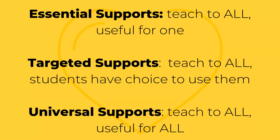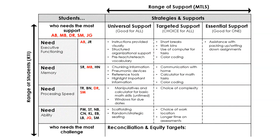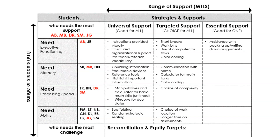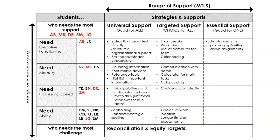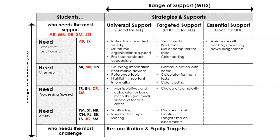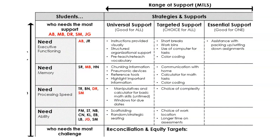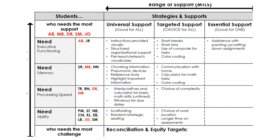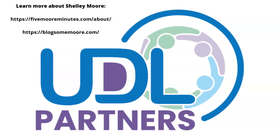But what makes them universal is when we teach them to all students and they are useful for all students — this is what should happen at a Tier 1 level of support. As you can see in this example, students and their areas of need are identified in the first column. After that, essential, targeted, and universal supports are determined. When we have a cheat sheet — a graphic organizer or template of strategies and supports and where learners fall within these ranges — it makes designing instruction, assessments, and our spaces an easier lift and sets up all learners for success.